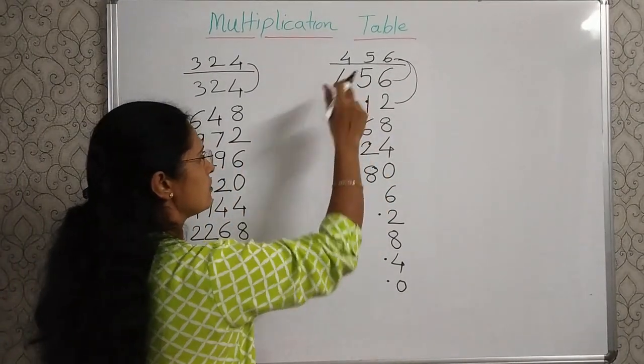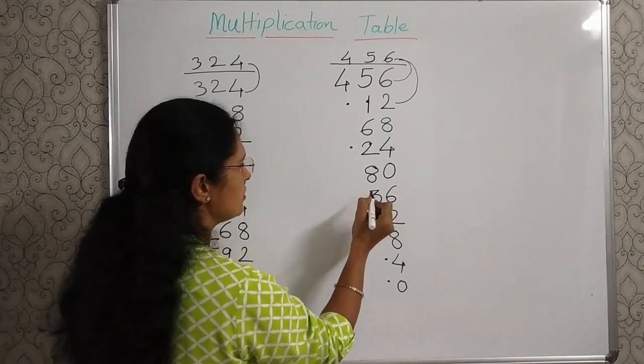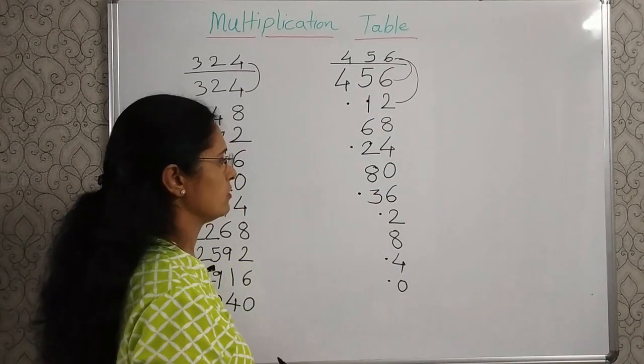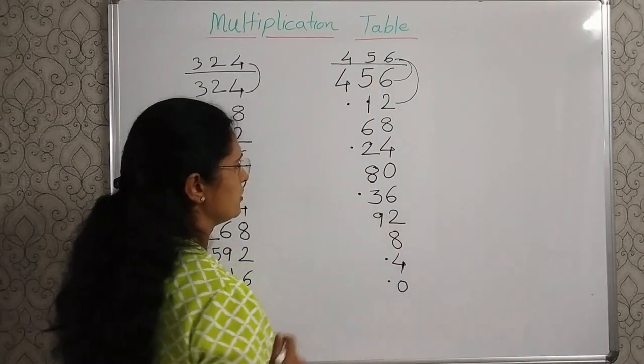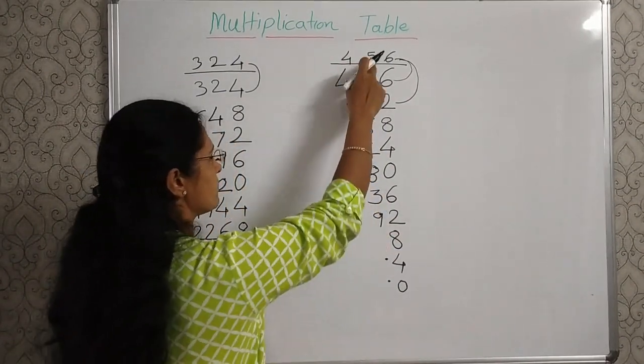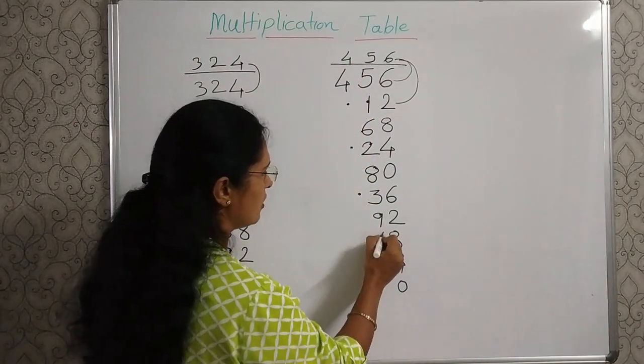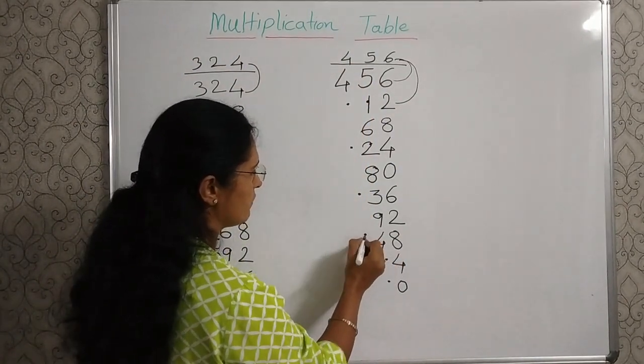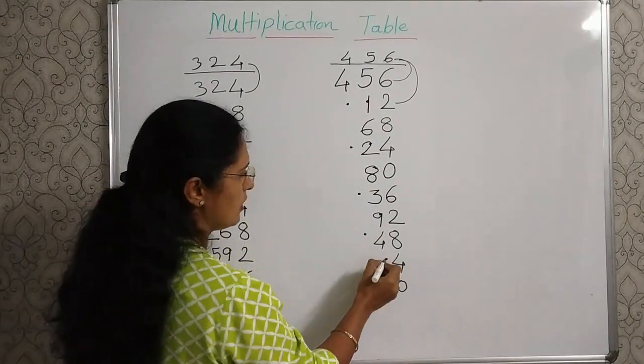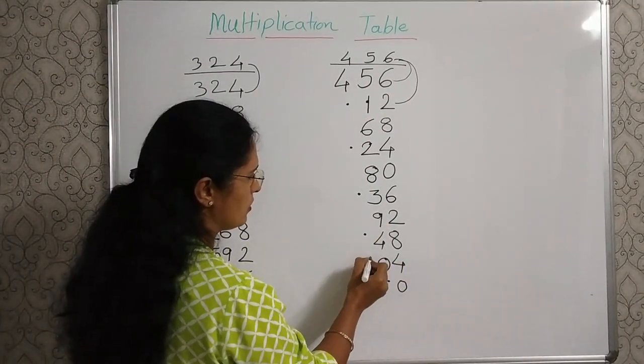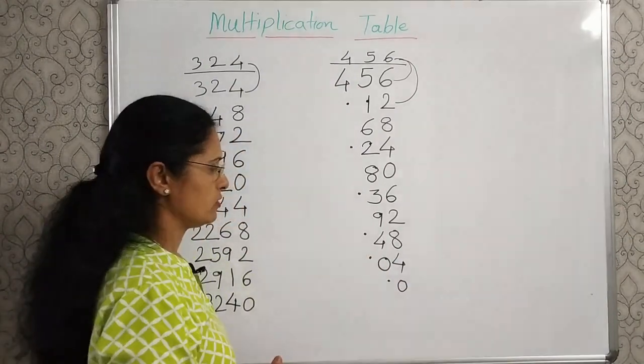8 plus 5, 13. Carryover 1. 3 plus 5, 8, and this one, 9. 9 plus 5, 14. Write 4. Give a dot for the carryover. 4 plus 5, 9, and this one, 10. Carryover 1.